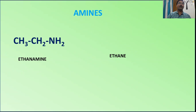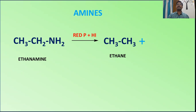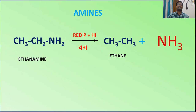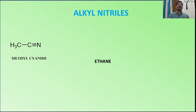For amines — ethylamine, whose IUPAC name is ethanamine — when treated with red phosphorus and hydrogen iodide, it converts into ethane and the NH₂ converts into NH₃. The CH₂ takes one hydrogen and the nitrogen takes one hydrogen, so two hydrogens are required.